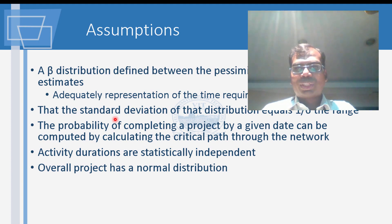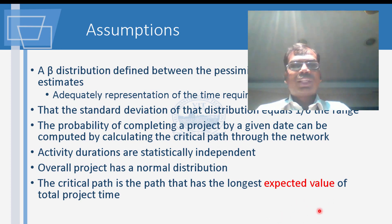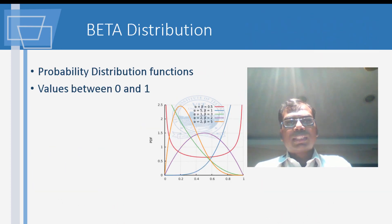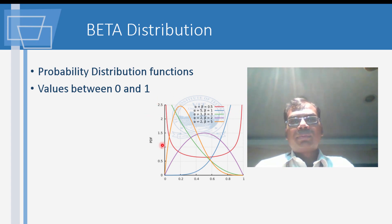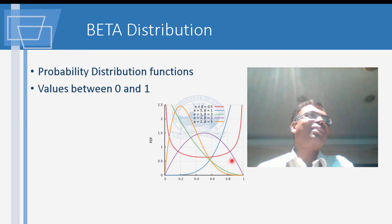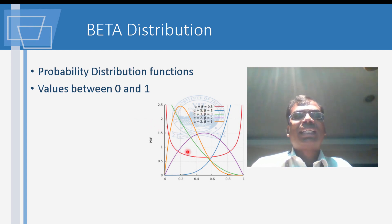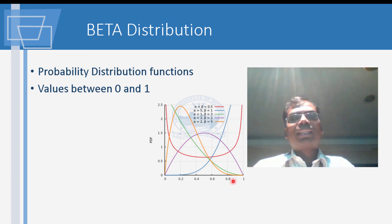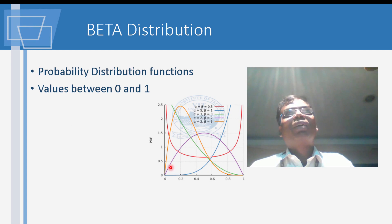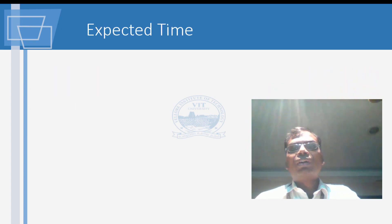The critical path is the longest expected value of total project time. Beta distributions can take various shapes between optimistic and pessimistic times, with values between zero and one. In practice, we just use the optimistic, most likely, and pessimistic times without interpreting the curves in detail. The expected time is a weighted average using the formula.